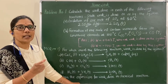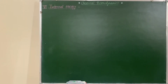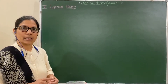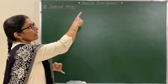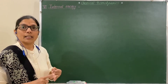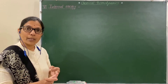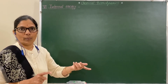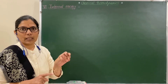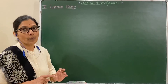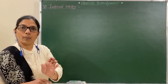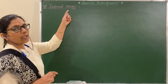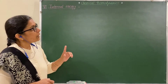Now let us start the next point: internal energy. In the previous session we studied: first, introduction to chemical thermodynamics; second, terms used in thermodynamics; third, nature of work and heat; fourth, PV type of work, its expression and numericals; fifth, maximum work; and sixth, work done in chemical reactions. Now we start internal energy.